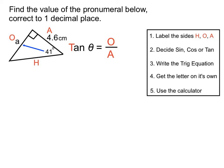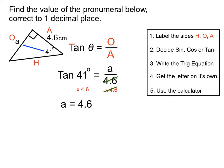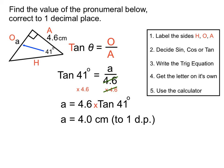We write tan theta equals opposite over adjacent, then fill in all the numbers: tan 41 equals a over 4.6. We multiply both sides by 4.6 to cancel and get the letter on its own: a equals 4.6 times tan 41. We type that into the calculator and get 4.0 cm rounded off.